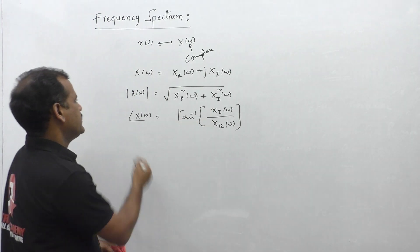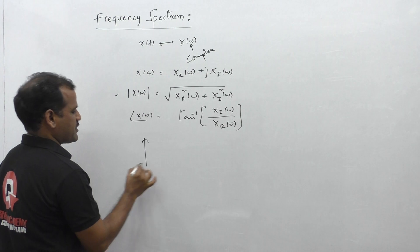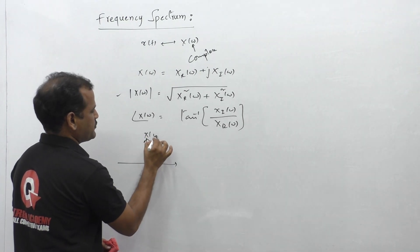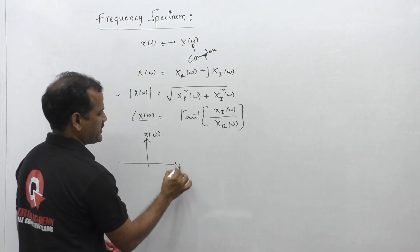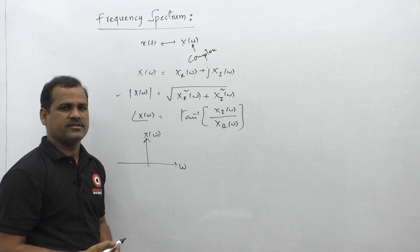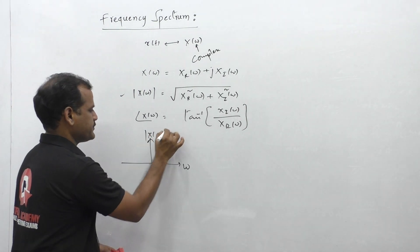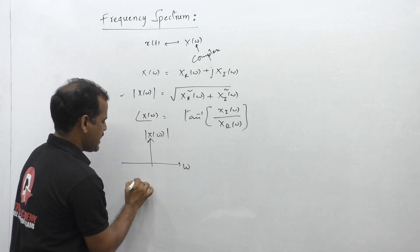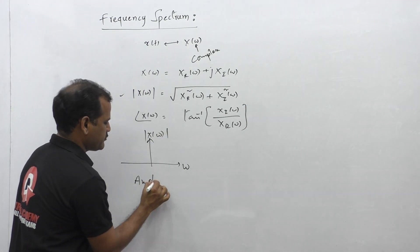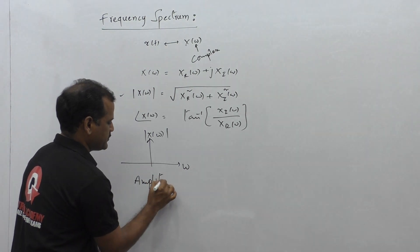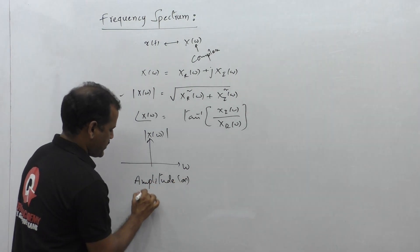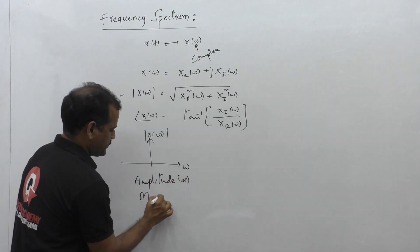If I take the amplitude of X of omega and plot the graph on the frequency axis by taking omega on the x-axis and the magnitude of X of omega on the y-axis, this plot is called the amplitude or magnitude spectrum.